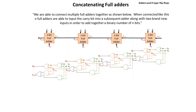We are able to connect multiple full adders together as shown below. When full adders are connected like this, we can have n full adders that input the carry bit into subsequent full adders along with two brand new inputs each time. This allows us to add together binary numbers. The example shown below is the circuitry for a 4-bit adder, which can therefore add together binary numbers in the range of 0 to 16.